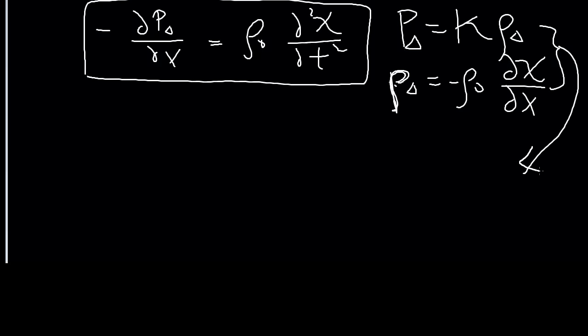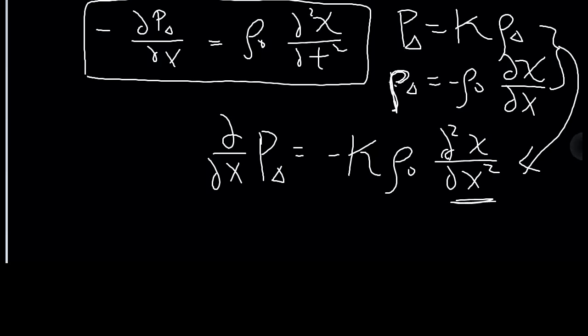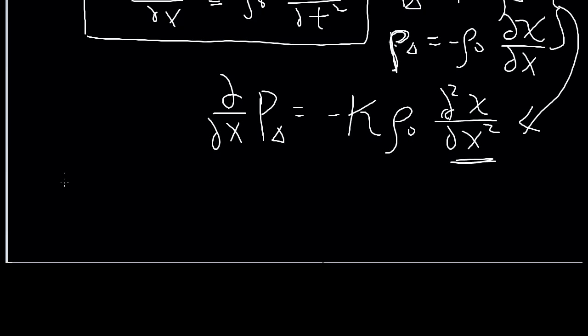Here, we combine these two to get the change in pressure is given by negative K rho naught d_chi/dx. And then to put it into the differential equation, we take the spatial derivative. Hey, second derivative, we're almost there. Negative and negative goes away. And so we have K rho d^2 chi/dx^2 is equal to rho naught d^2 chi/dt^2 second derivative second derivative. And that goes away.